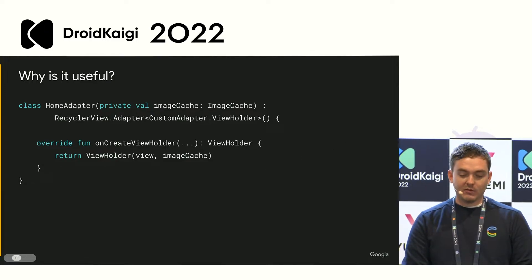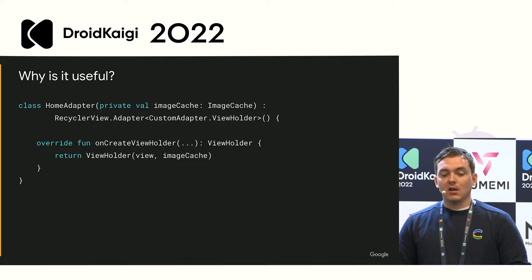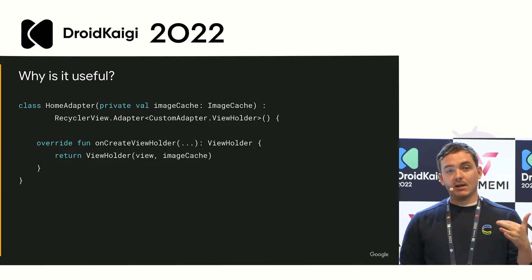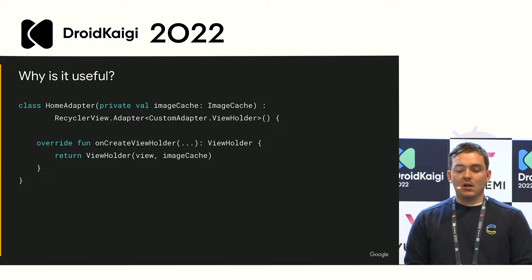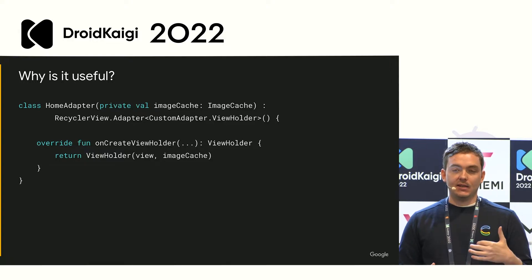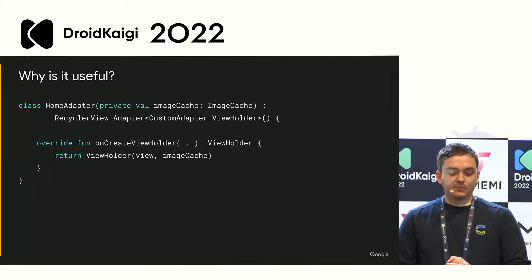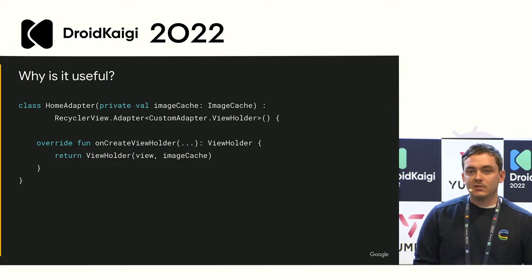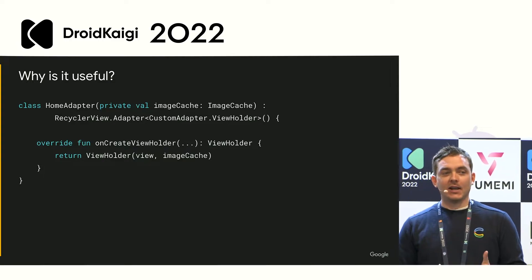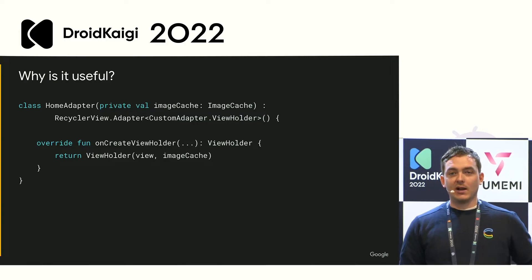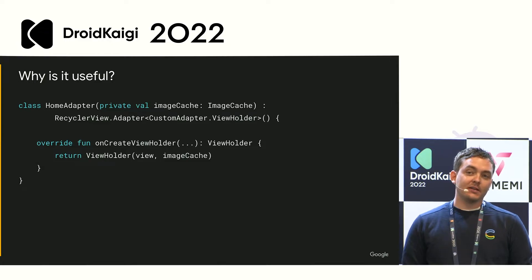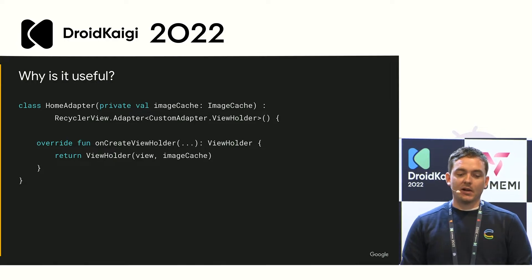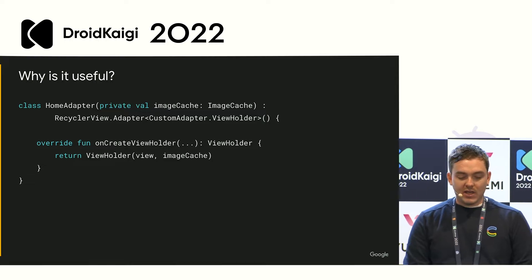This dives into how DI is actually useful. You might have an adapter that renders items on a home feed. In that adapter you might have a view holder, and that view holder might need the image cache to load something. But the adapter doesn't actually care about the image cache — it's just the view holder that needs it. If you're not using dependency injection, every time you refactor a class you end up passing these extra classes everywhere. A small change leads to a massive refactor where you have to touch 50 different classes to pass a new dependency around.